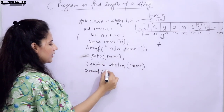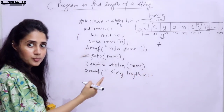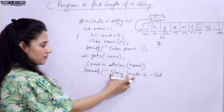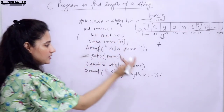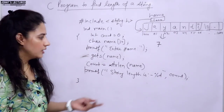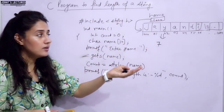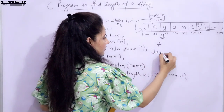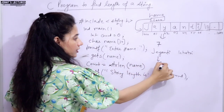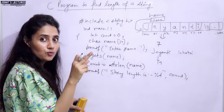Now we print the result using printf with %d and count. If you are entering the string 'Jainti', you will get 7. If you enter 'Jainti Khatri' with a space, since we are using gets, the space is also counted in the length, so the length would be 14 - space is counted, excluding the null character.